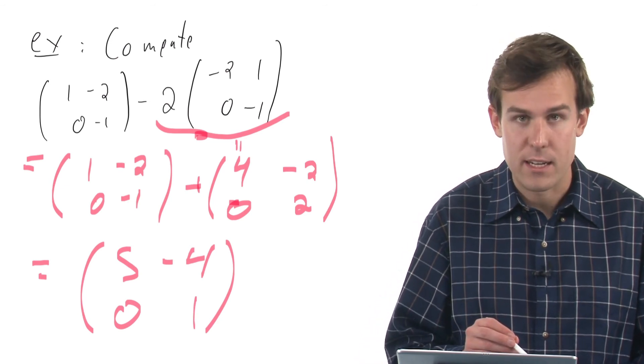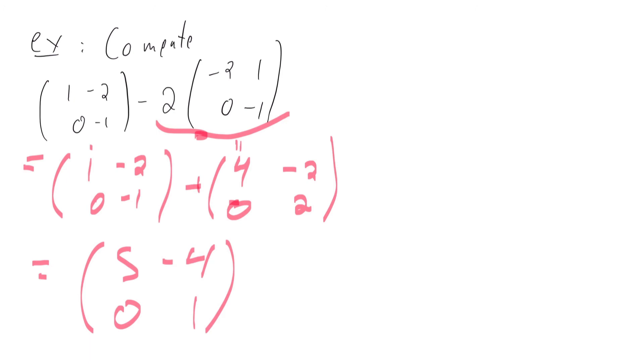What I mean is that the 1 here goes with the 4 to give me 5, -2 and -2 gives me -4, and then the same with the second row.